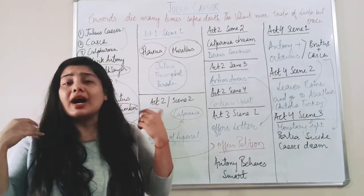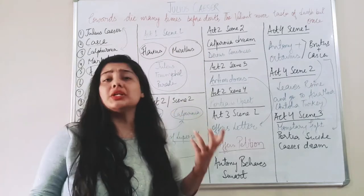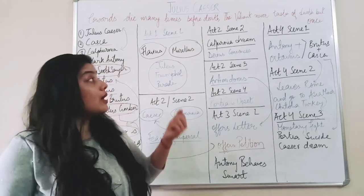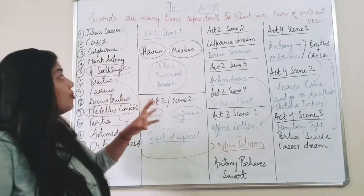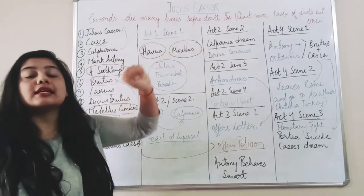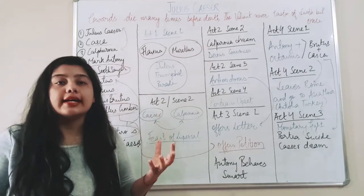So when she wakes up she tells Caesar that 'Caesar, you don't go out of your home for few days because I have seen a bad dream and I don't know why I am giving some superficial hints that your life is in danger.'